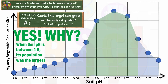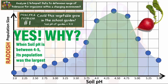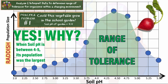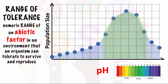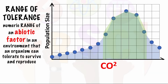Absolutely. So this mystery plant is a vegetable called a radish. And from this data, we can determine its range of tolerance — that's the numeric range of an abiotic factor that an organism can tolerate to survive and reproduce. That abiotic factor could be anything from pH, temperature, and so much more.